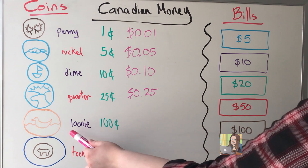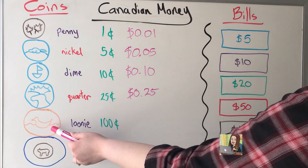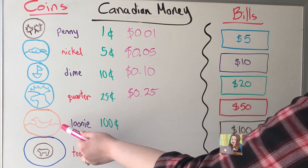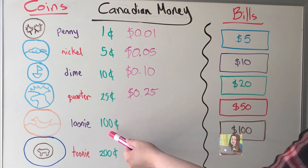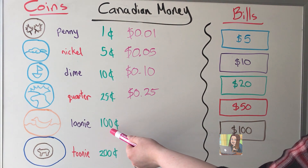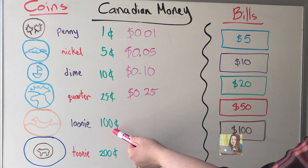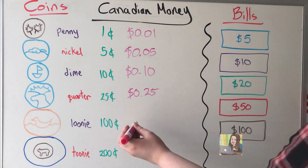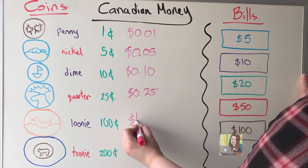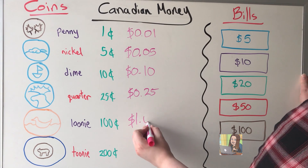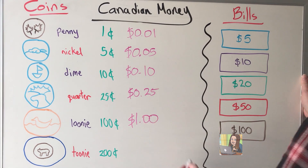The loonie, with the loon — the bird on it — is worth 100 cents, and every 100 cents we get one dollar. So we can write this as $1.00.